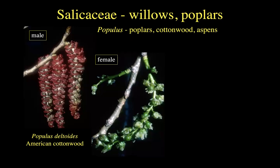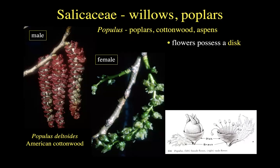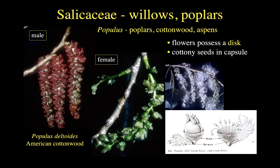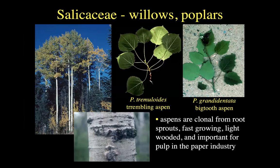A smaller but similarly important genus in our state is the poplars, cottonwoods, and aspens in the genus Populus. Similarly, we have males and females. You can see the different kinds of flowers in Populus deltoides, our American cottonwood. The base of these flowers is very disc-like — kind of like a hypanthium — but without obvious petals and sepals, subtended by a very distinctive bract. And there again are the cottony seeds from the female trees. The trembling aspen, Populus tremuloides, is beloved to everyone in Colorado.